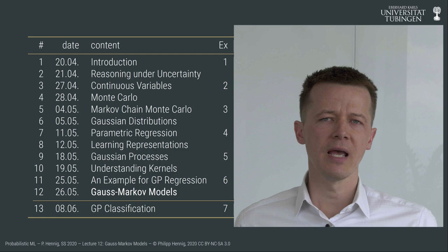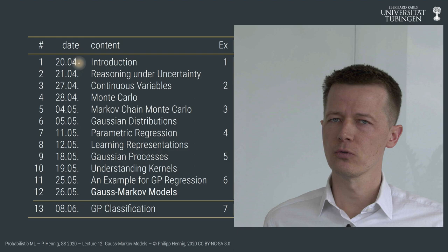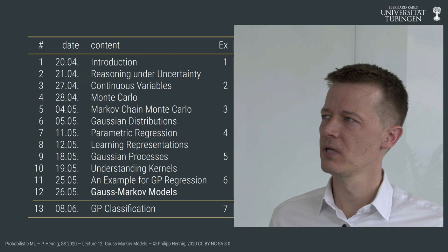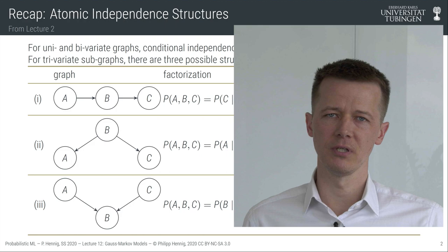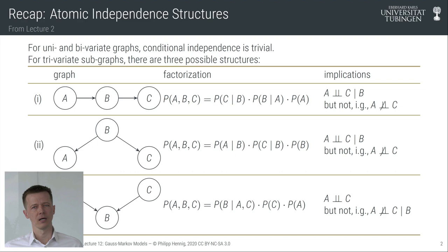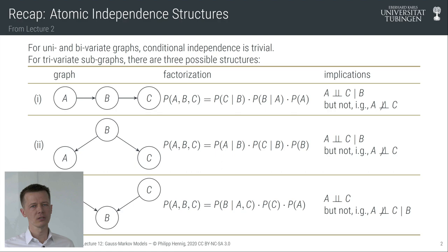As we approach the end of the Gaussian phase of this lecture course, I'd like to make a connection back to lecture two, where we spoke about a very fundamental way of dealing with computational complexity — conditional independence. I introduced the notion of directed graphical models, which are a visualization of conditional dependence and independence structure in joint probability distributions.